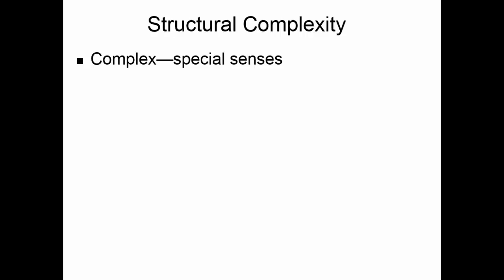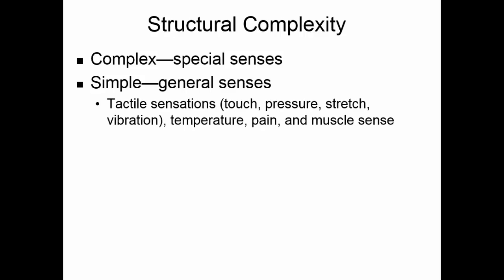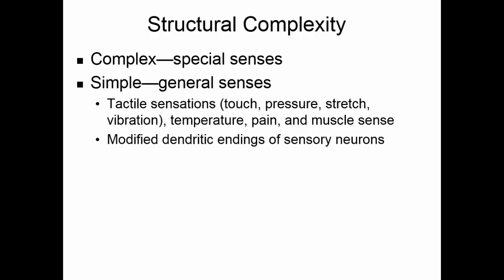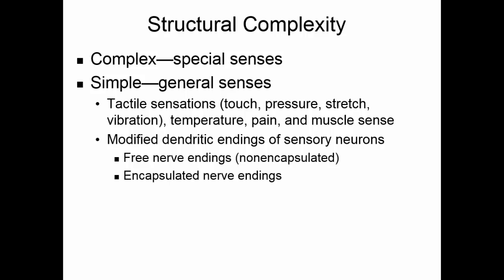Structurally, sensory receptors are either complex or simple. The complex receptors are the special senses — the eye, the ear, and so forth. Your structurally simple receptors pick up your general senses: tactile sensations of touch, pressure, stretch, and vibration, temperature, pain, and your sense of muscle position and stretch. These are all modified dendritic endings of sensory neurons. Some of these are free nerve endings or non-encapsulated dendrites; others are encapsulated nerve endings.